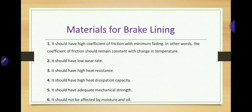Next, the brake lining should have a low wear rate so that its life will be longer. It should have high heat resistance — it should not retain the heat generated between the brake lining and rotating disc, but should transmit more heat to the air, giving high heat dissipation capacity. Fifth, it should have adequate material strength so it will not fracture during operation. It should not be affected by moisture, oil, or environmental effects.